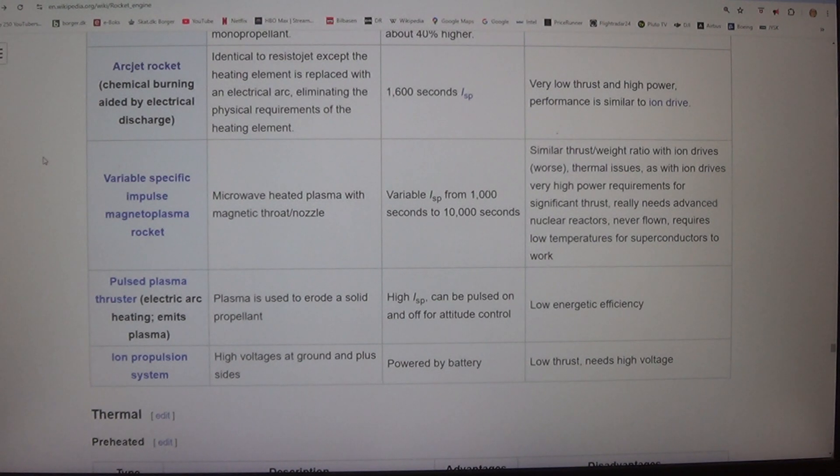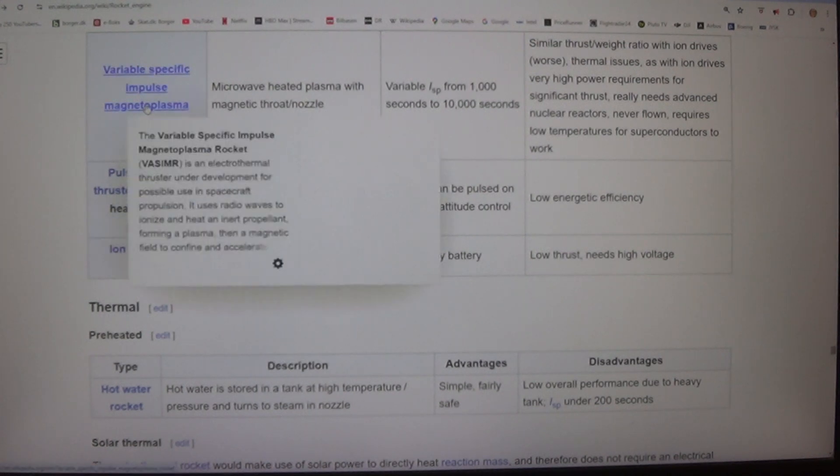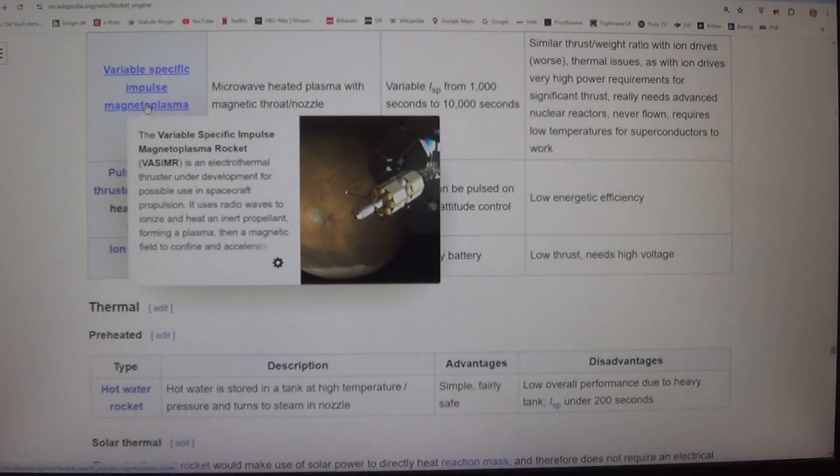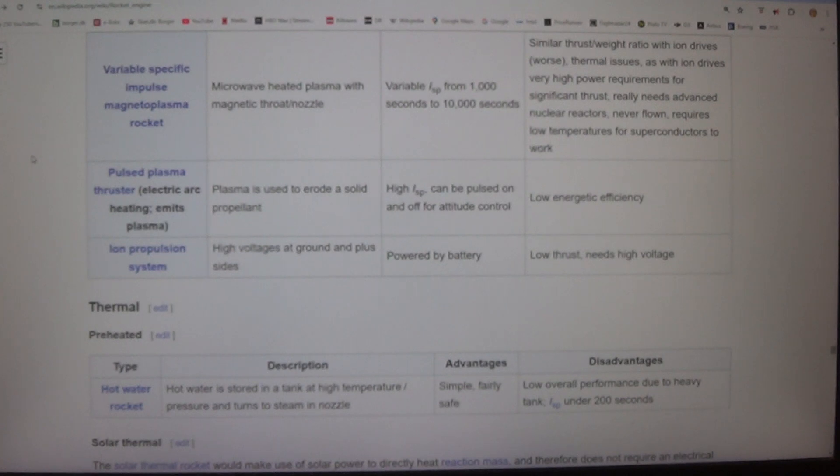Variable specific impulse magnetoplasma rocket - microwave heated plasma with magnetic throat/nozzle. Variable ISP from 1,000 seconds to 10,000 seconds and similar thrust/weight ratio with ion drives. Disadvantages: Thermal issues as with ion drives. Very high power requirements for significant thrust. Really needs advanced nuclear reactors. Never flown. Requires low temperatures for superconductors to work. Pulsed plasma thruster - electric arc heating emits plasma. Plasma is used to erode a solid propellant. High ISP. Can be pulsed on and off for attitude control. Low energetic efficiency.